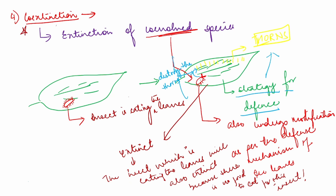Co-extinction is very important. It is basically the extinction of co-evolved species which are related in an obligatory way. This is one example of co-extinction.